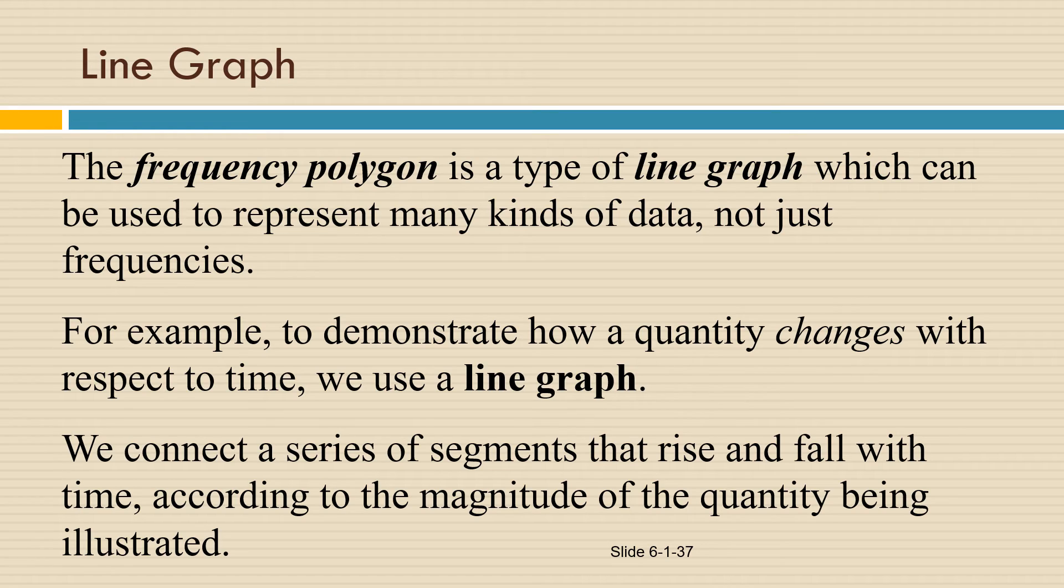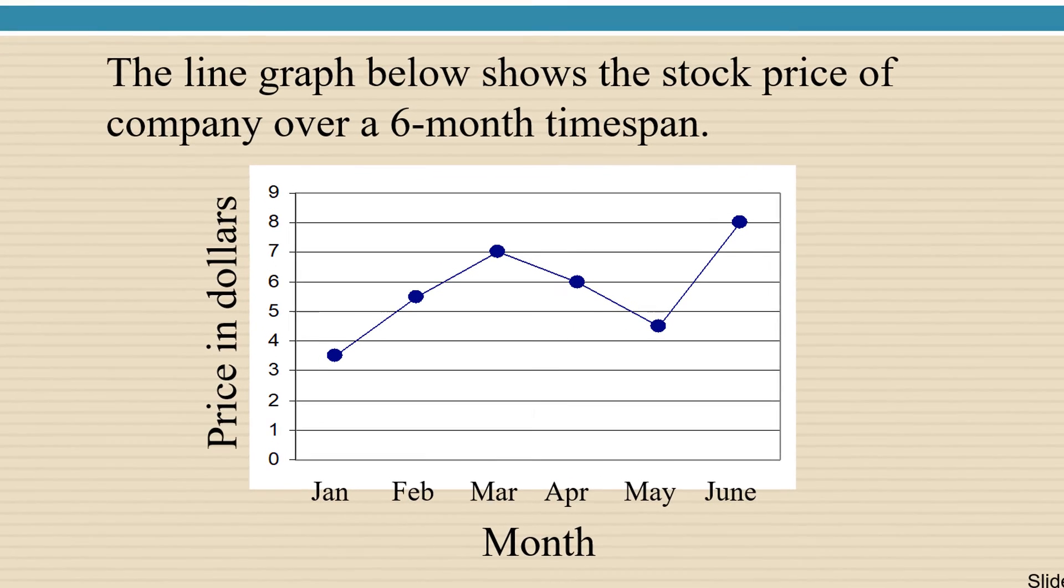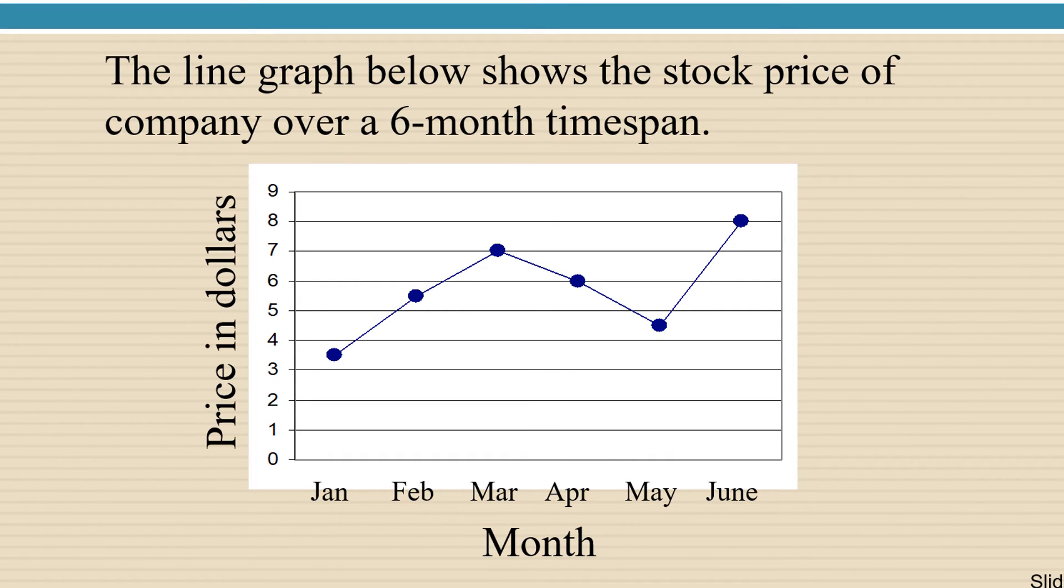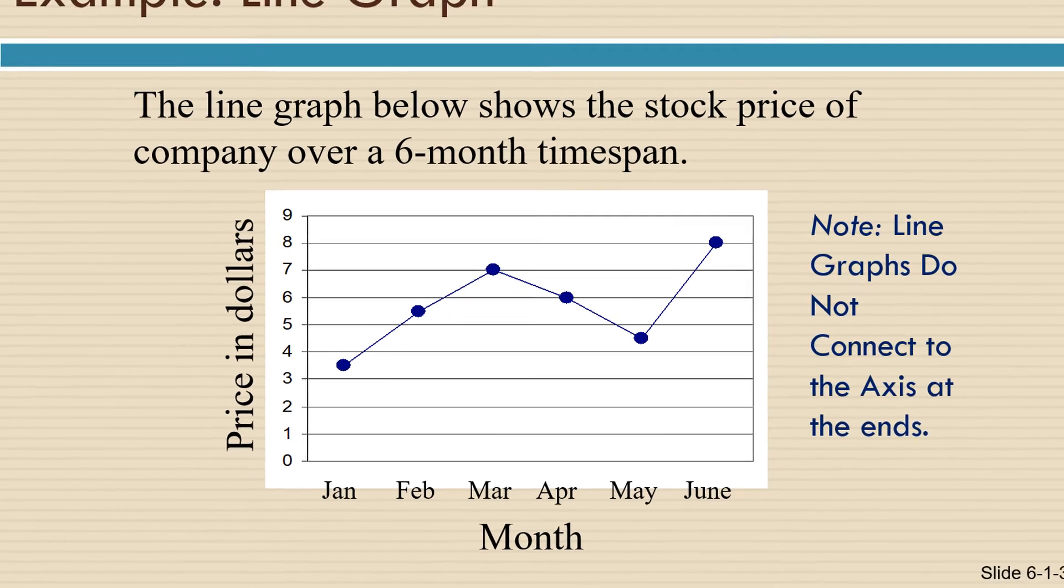We connect a series of segments that rise and fall with time according to the magnitude of the quantity being illustrated. Here's a line graph that shows the stock price of a company over a six-month time span. You can quickly see from this diagram that the stock price is on the rise. Notice, too, that line graphs do not connect to the axis at the ends unless they happen to be a frequency polygon.